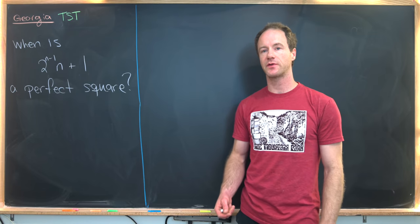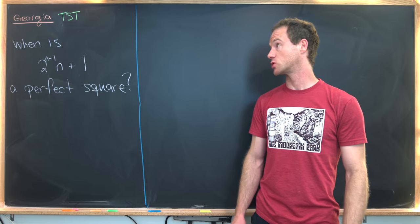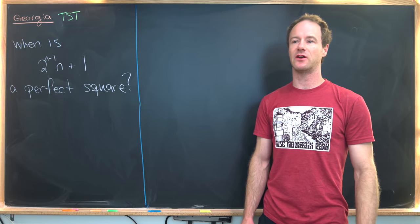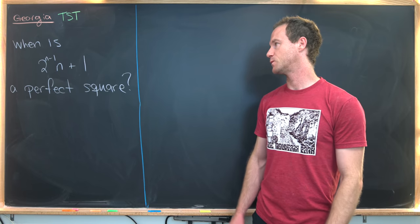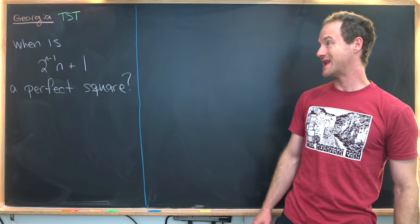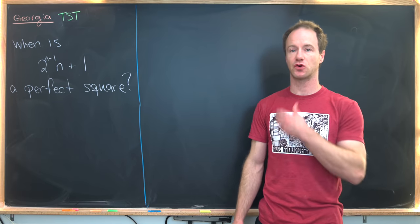Here we're going to look at a nice little number theory problem that was on the team selection test for the country of Georgia to send to the International Math Olympiad. We want to answer the question: when is 2^(n-1) × (n+1) a perfect square?